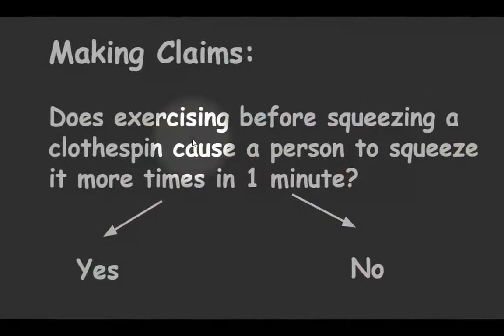Okay, so the last part of the lab asks you to make claims. Making a claim is basically can you explain it with maybe an experiment and do you have a good explanation. So here's a question: Does exercising before squeezing a clothespin cause a person to squeeze it more times in one minute?